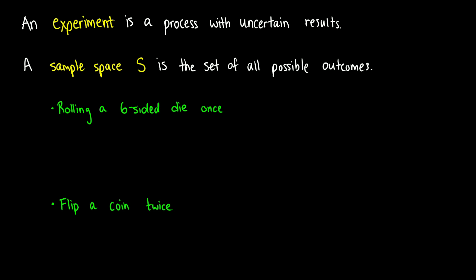Here are some basic examples. Rolling a six-sided die once — what are all the possible outcomes? Well, assuming the numbers are 1 through 6, we write S for our sample space: the outcomes are 1, 2, 3, 4, 5, and 6. So all of those are possible outcomes for one die roll.